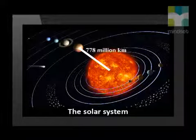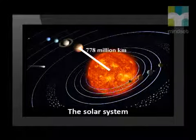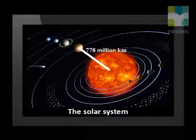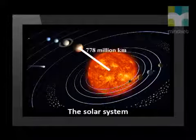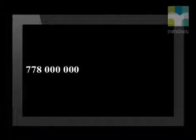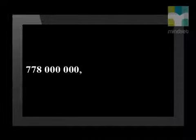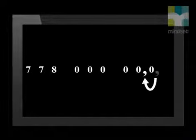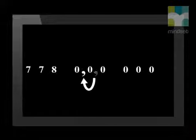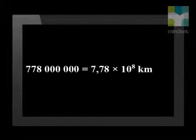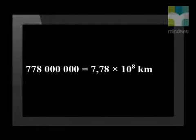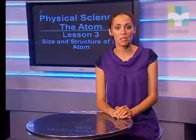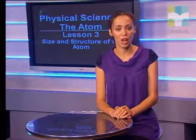Let's first look at a very big number. What is the distance of Jupiter from the Sun? Jupiter is approximately 778 million kilometers from the Sun. To write this number in scientific notation, we count from the last zero and move the decimal place so that we write an integer between 0 and 10. We move the decimal point 8 places. We say this number as 7.78 times 10 to the power 8. The exponent is positive, and this tells us that this is a very large number.